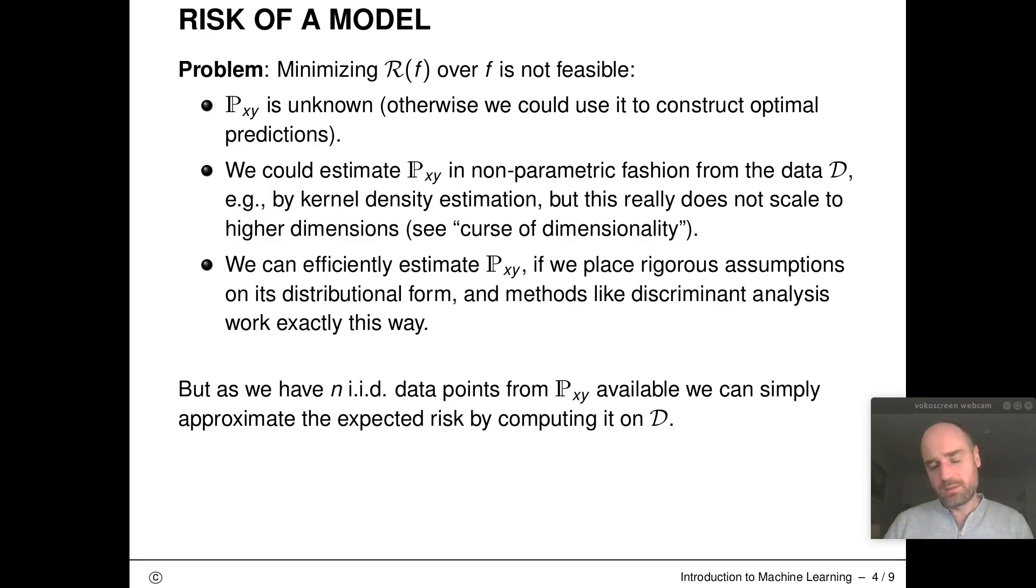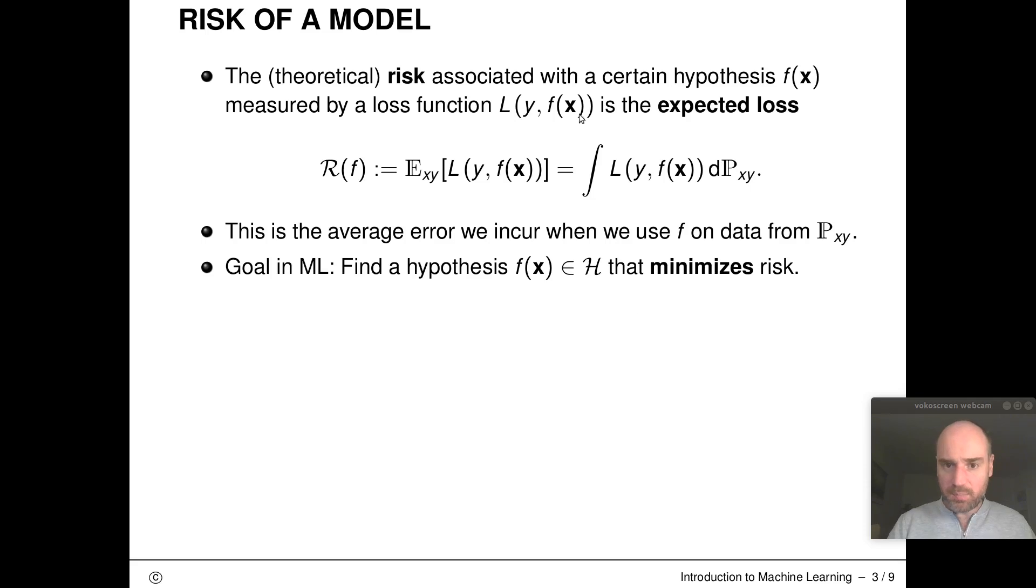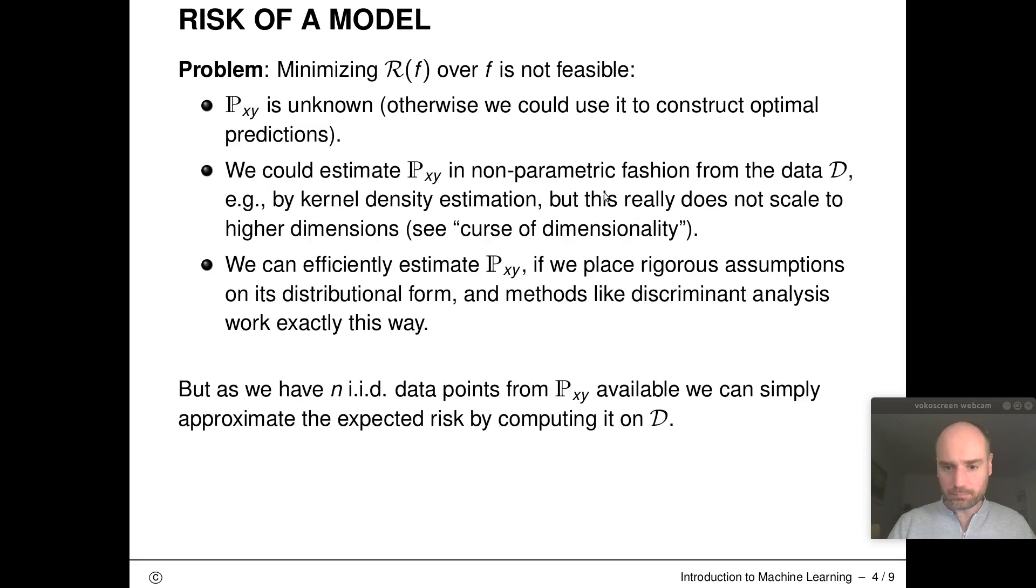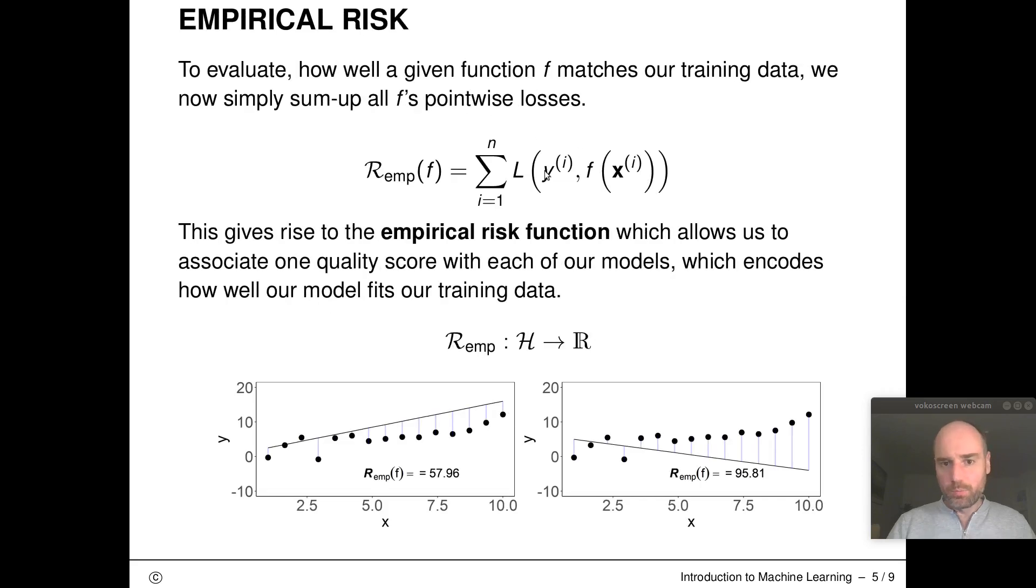The whole trick builds on the fact that we might not have capital P available to us but we have n i.i.d. data points sampled from capital P available. So we can simply approximate this expected risk by replacing this integral with a finite sum over our data set D.